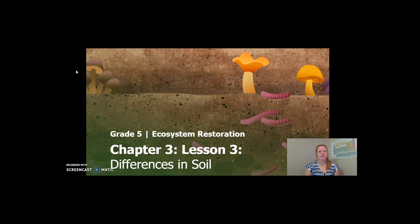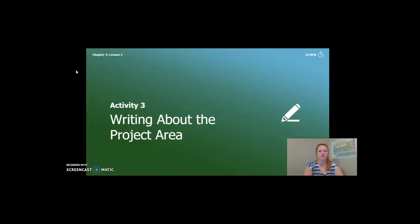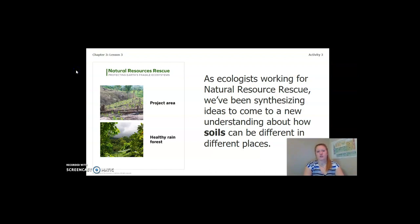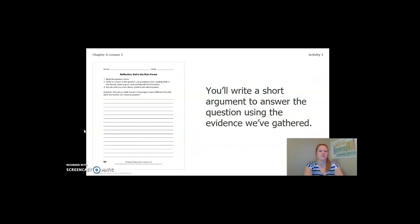Hello 5th graders! This is Chapter 3 Lesson 3 of our Ecosystem Restoration Unit. Remember, during this lesson we are skipping activity 2, so let's continue our learning. As ecologists working for Natural Resource Rescue, we've been synthesizing ideas to come to a new understanding about how soil can be different in different places, looking at our project area and our healthy rainforest. You are going to write a short argument to answer the question using the evidence gathered from our readings, investigations, and our simulation. You can find this on page 66 of your Ecosystem Restoration Workbook or on page 5 of your Chapter 3 Lesson 3 Activity Workbook.